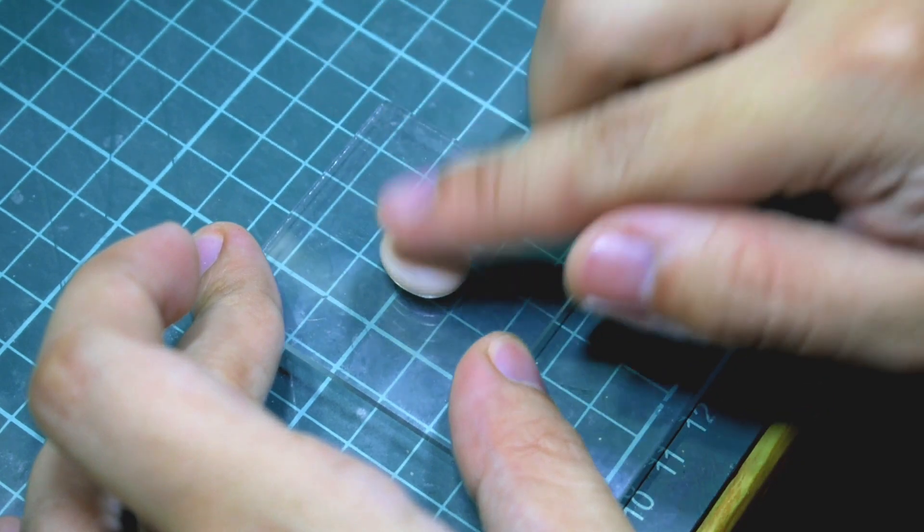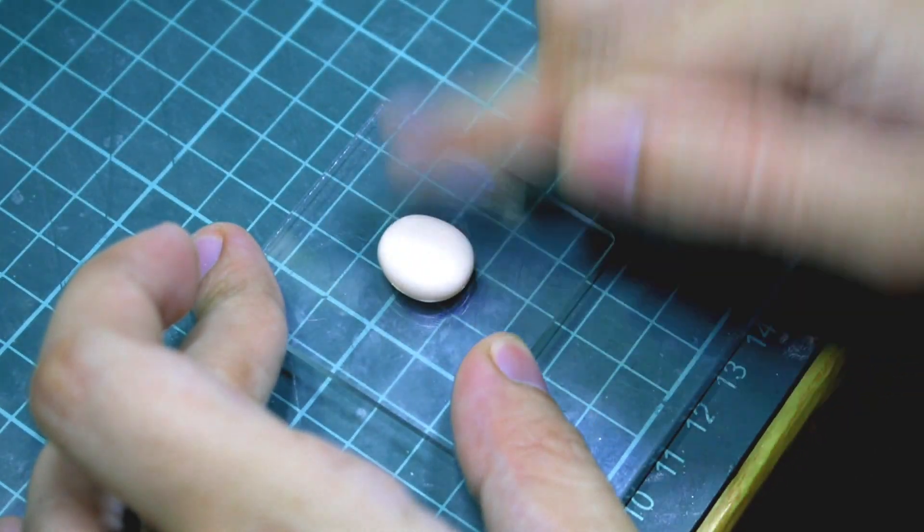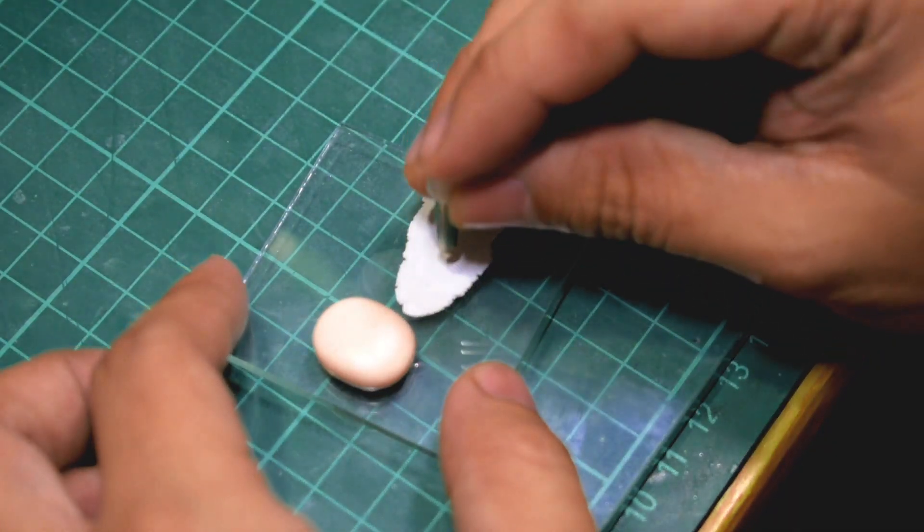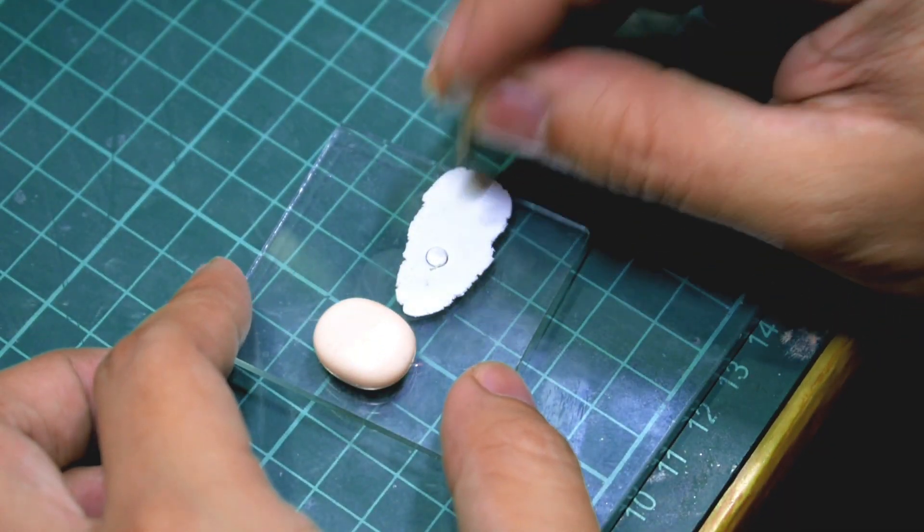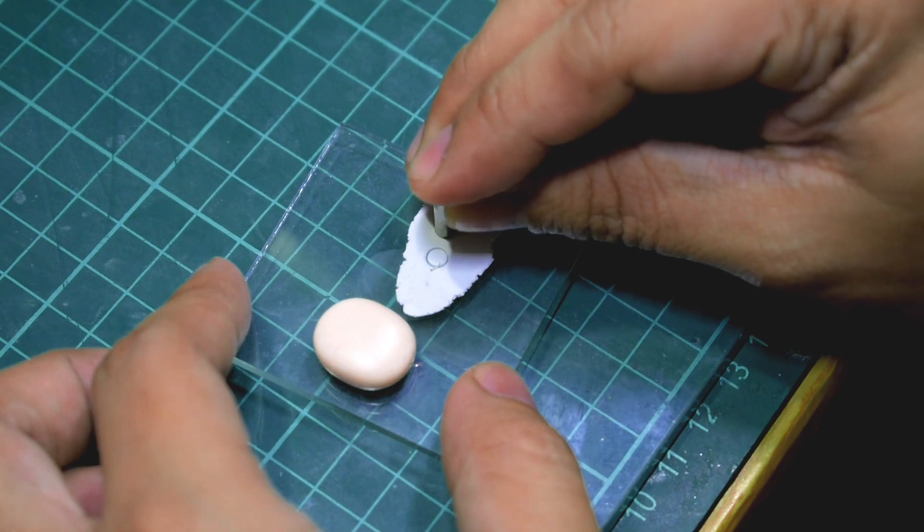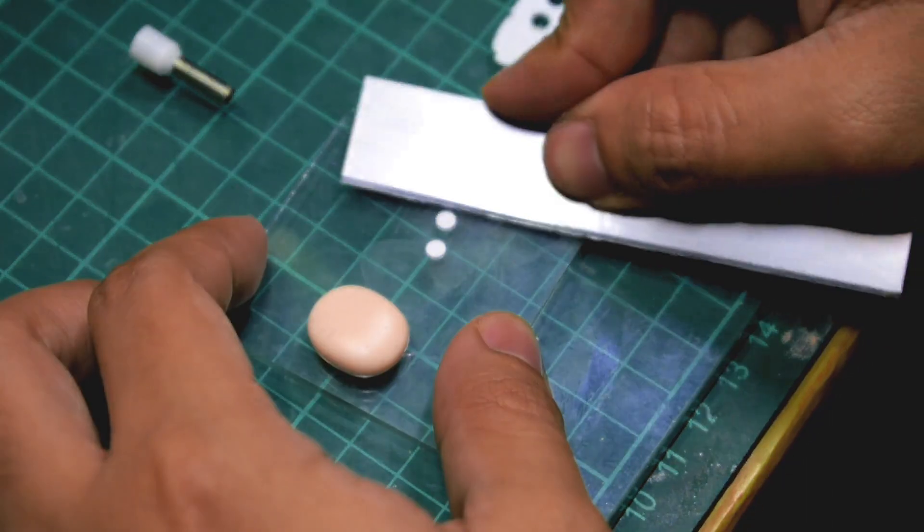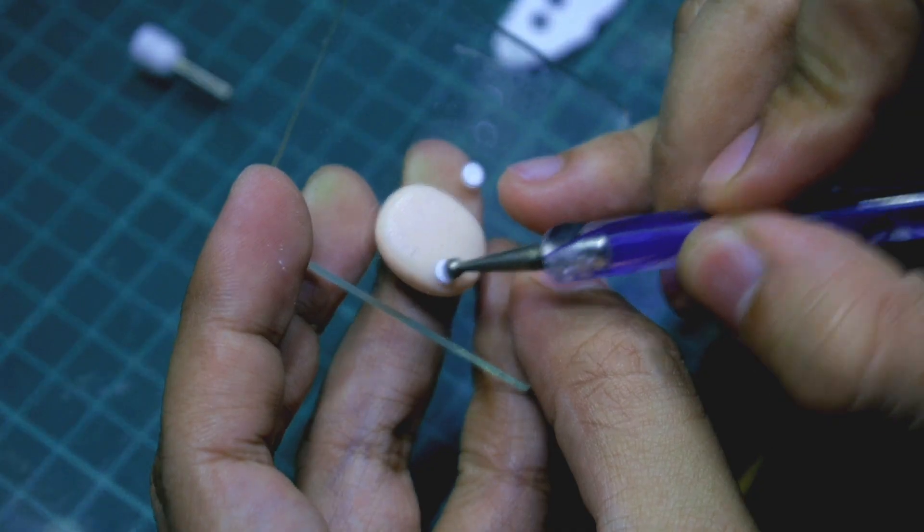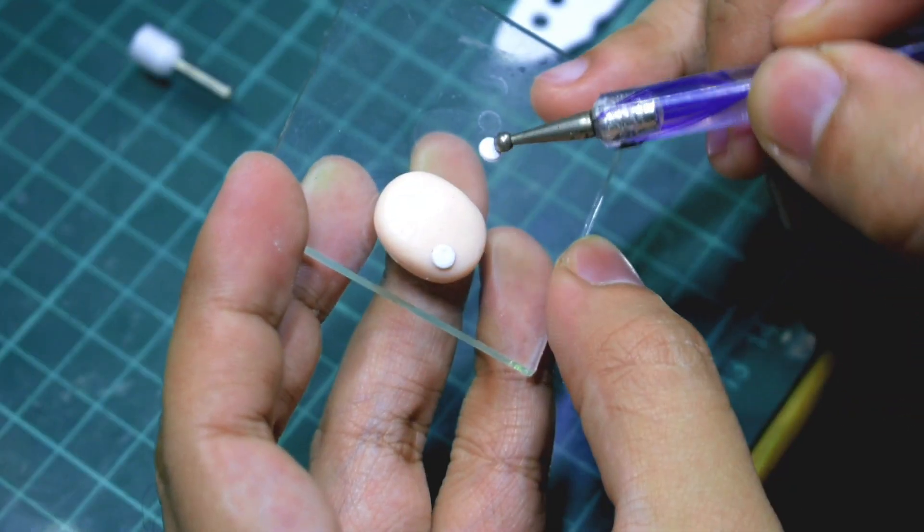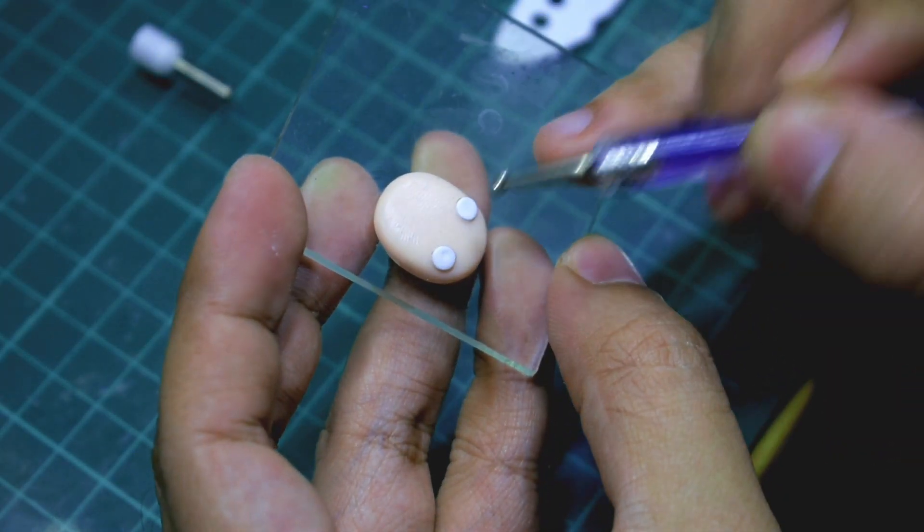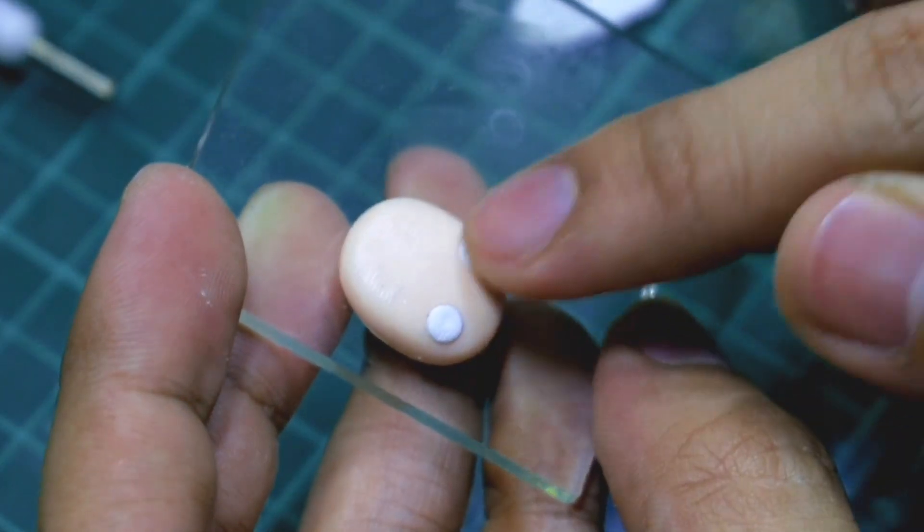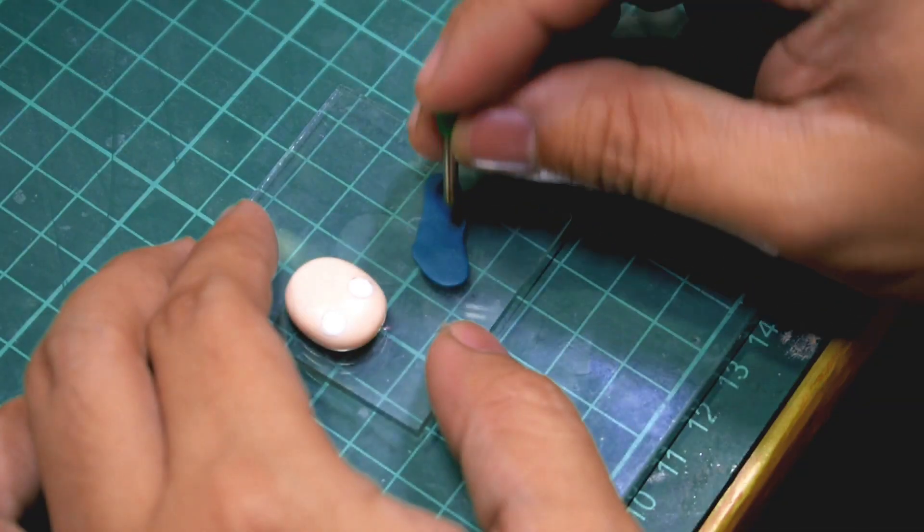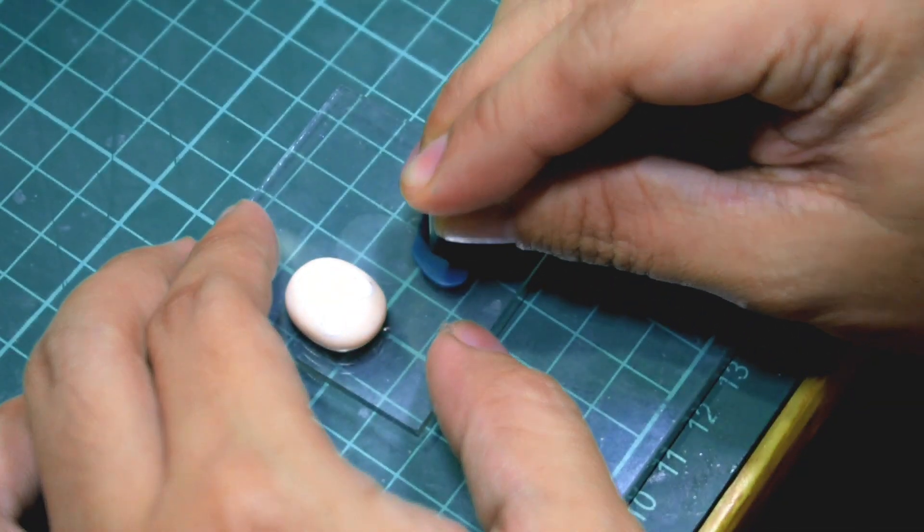So first let's make the head. As you can see, I just flattened it and I will shape this into an oblong. For the eyes I'm just going to use this small cutter, and I guess you can get this on AliExpress because I got mine from Shopee.